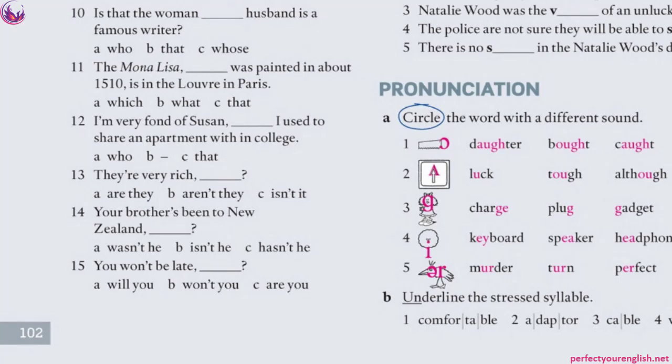Number 14: 'Your brother has been to New Zealand, hasn't he?' Tag question with present perfect — the auxiliary is 'has,' so we use it in the tag. Positive sentence → negative tag: 'hasn't he?' 'Isn't he' is wrong because when the main sentence doesn't have 'to be' as the main verb, we don't use 'to be' in the tag. When we have a modal, we use the modal. When we have an auxiliary like 'have,' we use that.